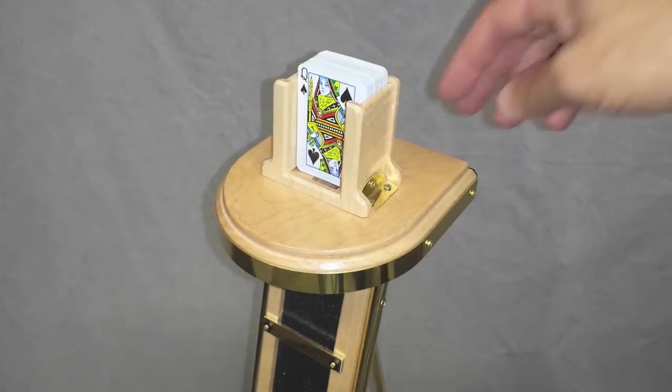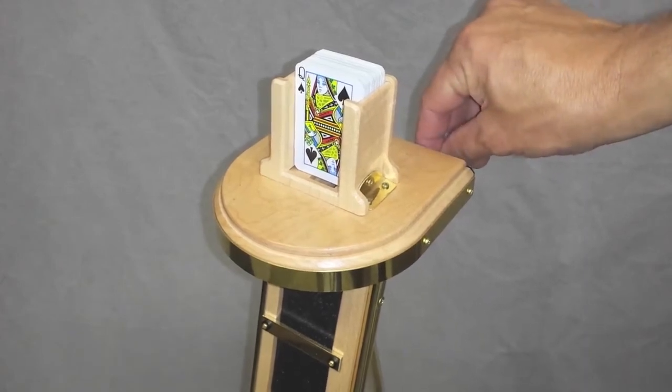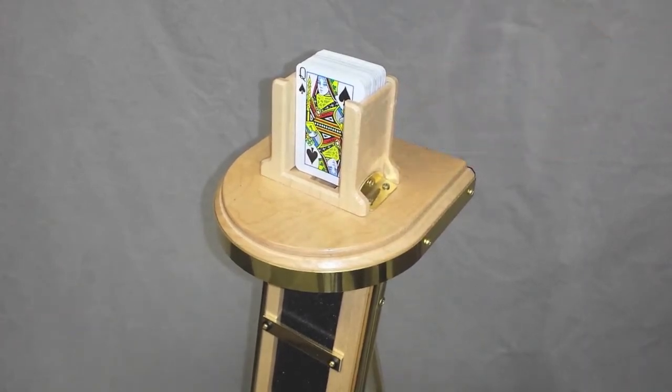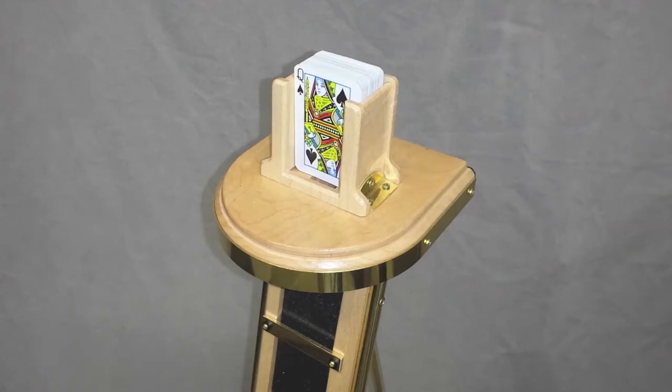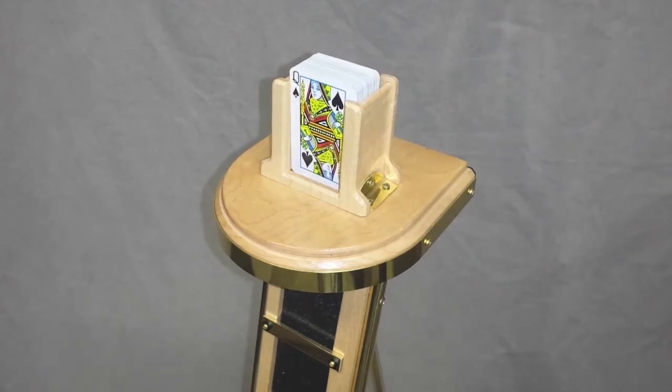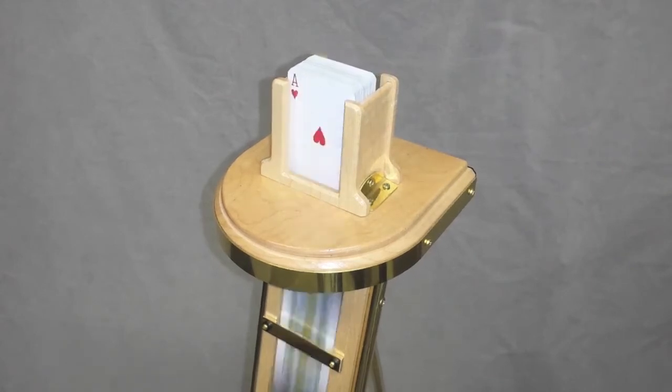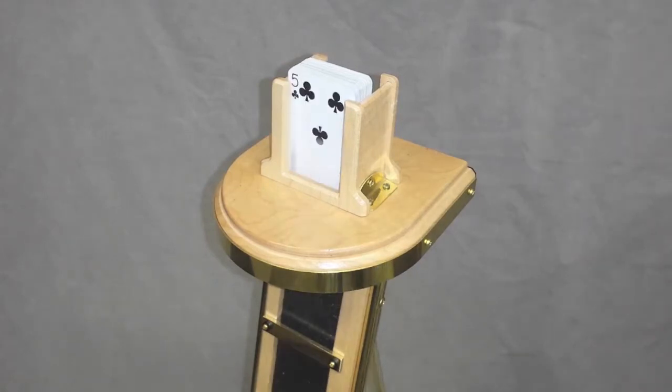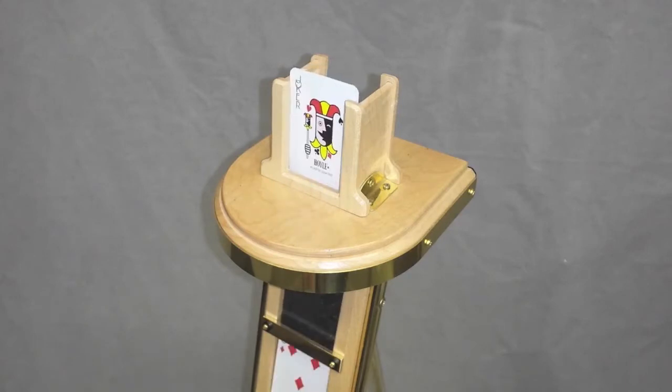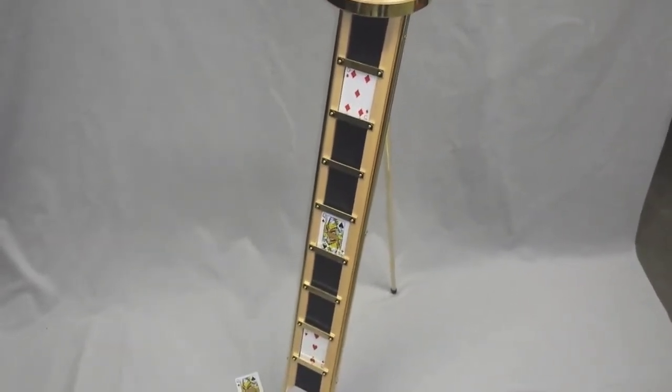Now you're ready to roll. At whatever point in the routine you want, flip the switch on and have the gimmick start running. The cards start moving forward and away they go, with the Joker staying at the end and of course three cards on the ladder.